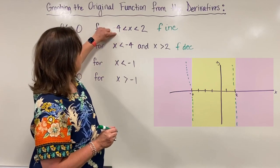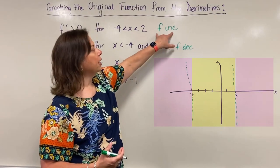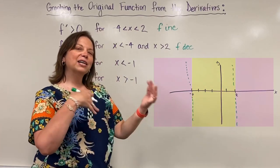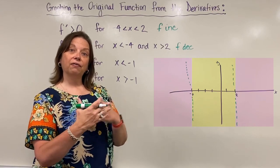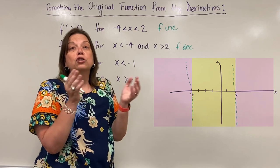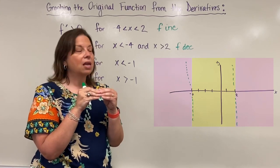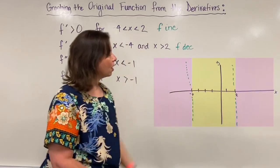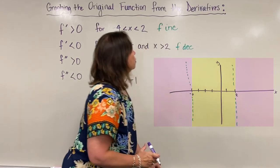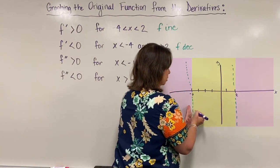At negative 4 and at 2, something special is happening — we're transitioning from f decreasing to f increasing or vice versa. That means there must be a point where f is no longer increasing or decreasing, a horizontal tangent where the derivative equals zero. So along these dashed lines I'll have a local maximum or minimum where the graph turns around. Between negative 4 and 2, the function is increasing.